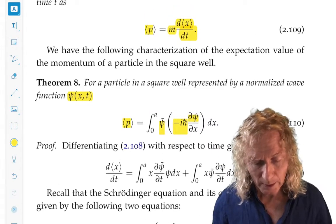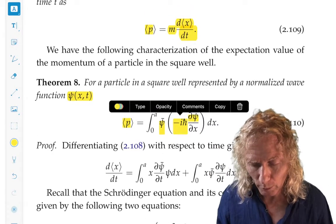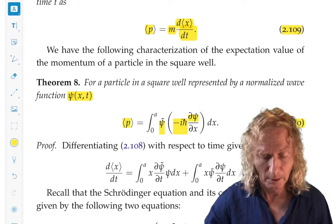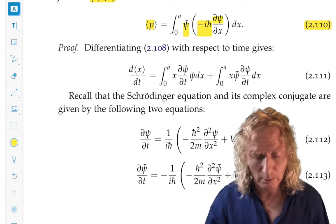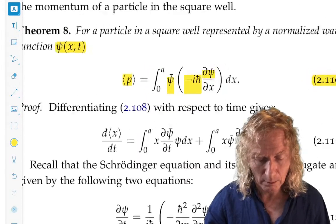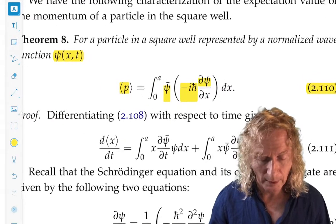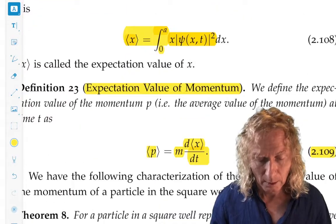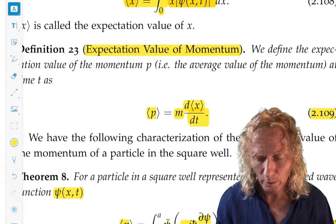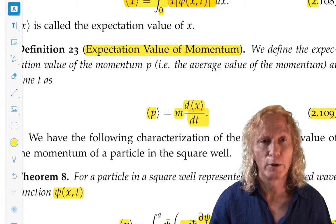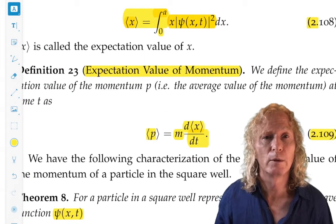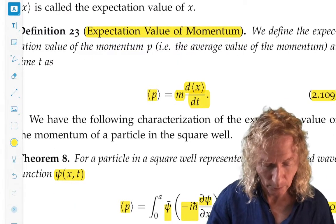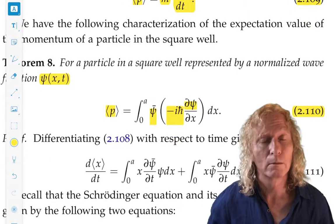So, the idea now is we want to prove that 2.110 is the same as 2.109. So, how do you do that? Well, the obvious thing to do is to differentiate the expectation value of position that we gave above.